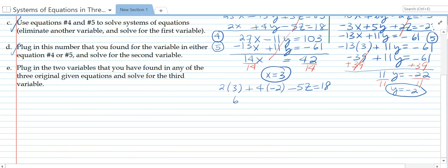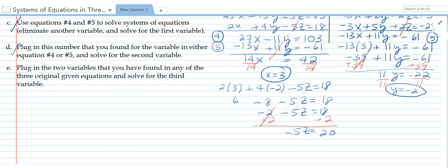So 6 minus 8 minus 5z equals 18. Negative 2 minus 5z equals 18. Add 2 to both sides. Negative 5z equals 20. Divide both sides by negative 5. And z equals negative 4.